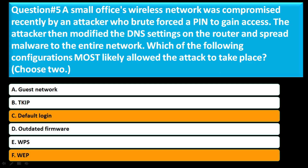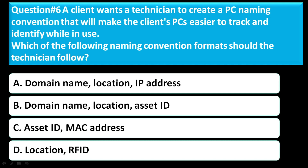Question 6: A client wants a technician to create a PC naming convention that will make the client's PCs easier to track and identify while in use. Which of the following naming convention formats should the technician follow? Option A: domain name, location, IP address. Option B: domain name, location, asset ID. Option C: asset ID, MAC address. Option D: location, RFID. The correct answer is C — asset ID and MAC address.